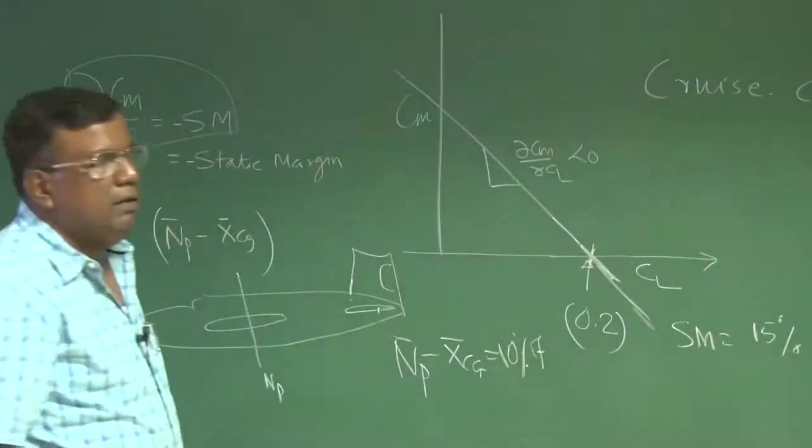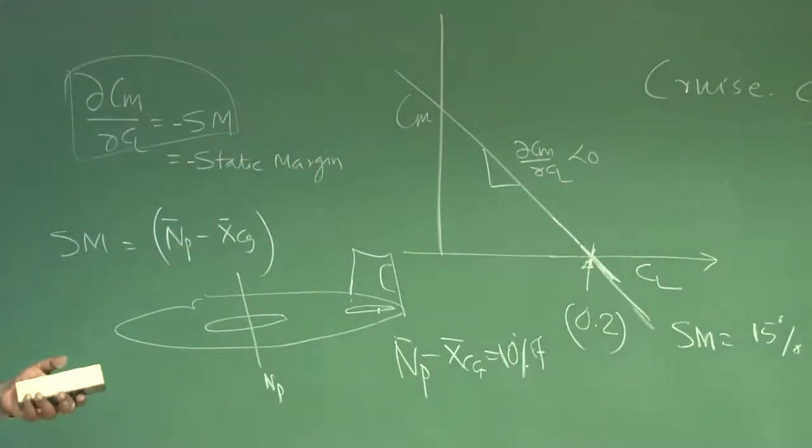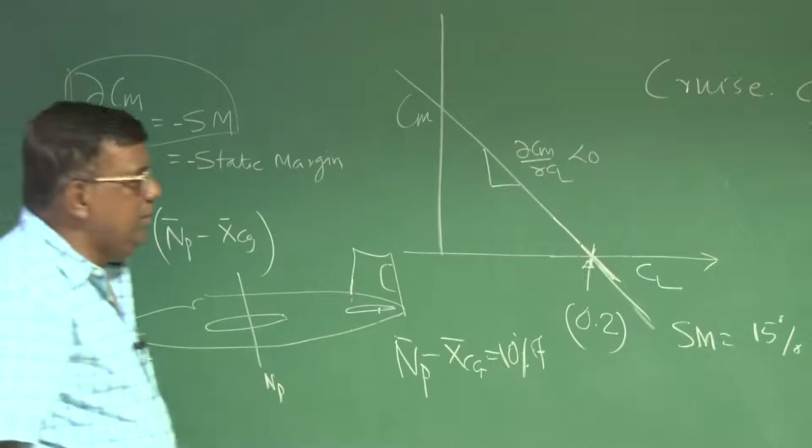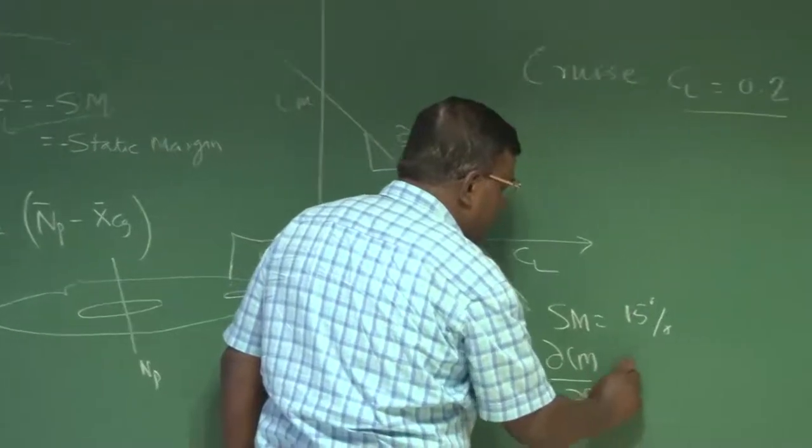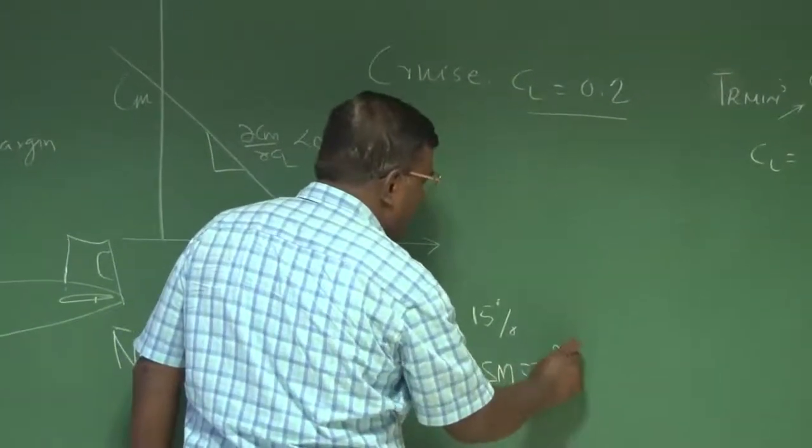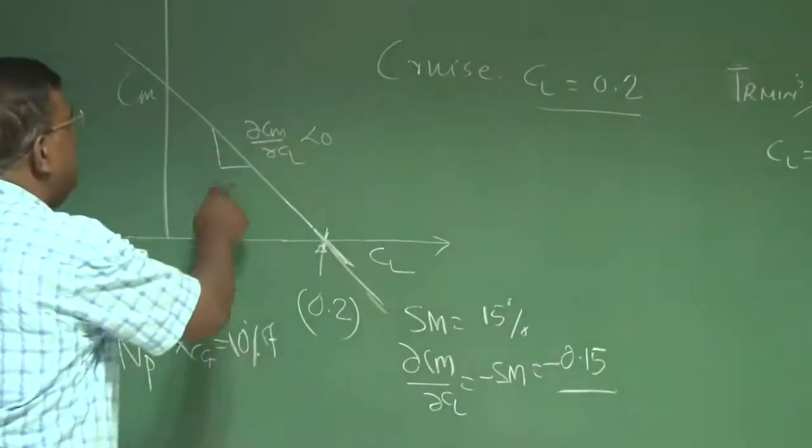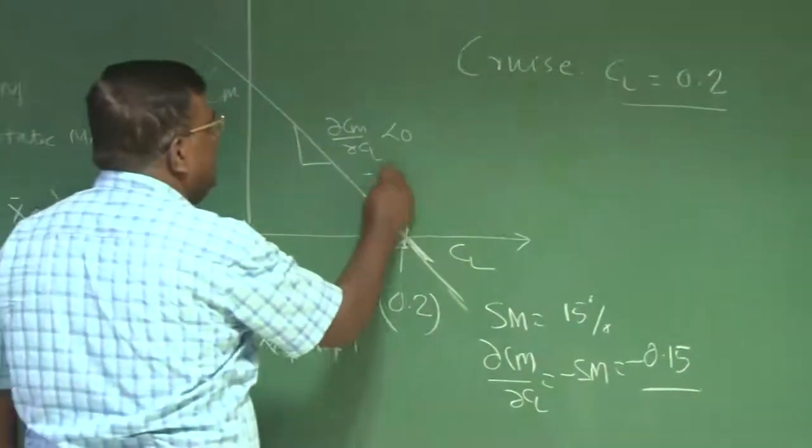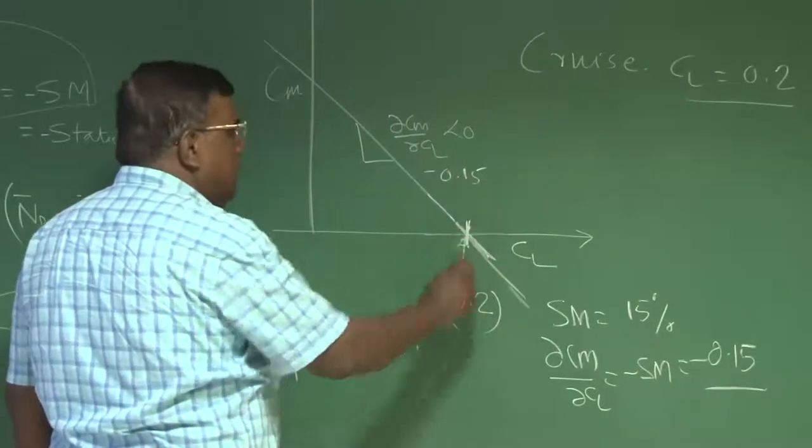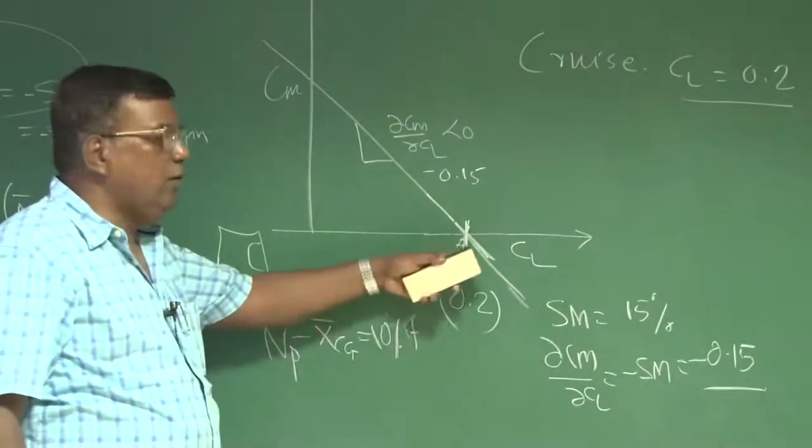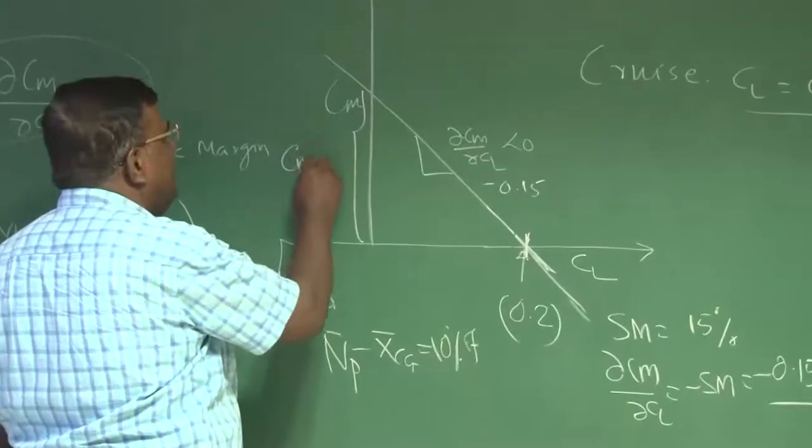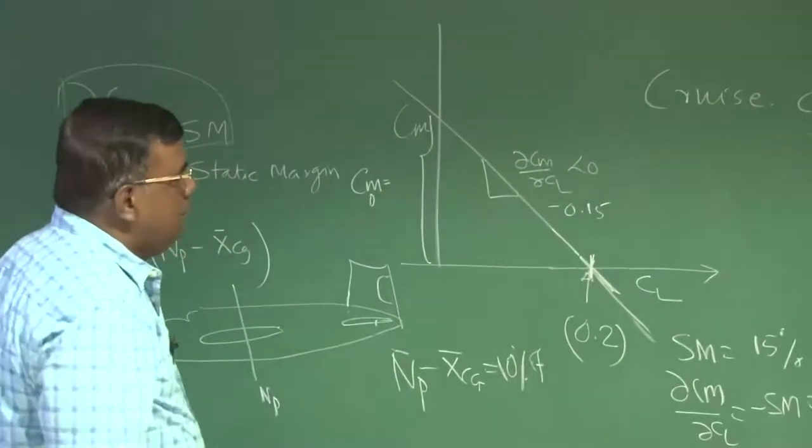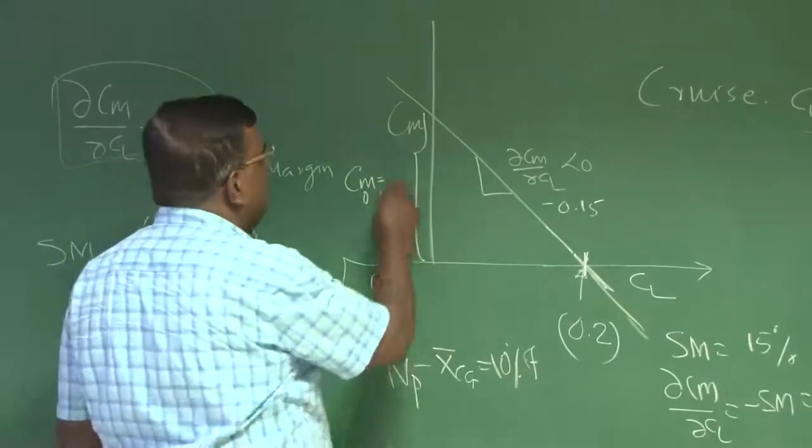So static margin 15 percent means that dCm by dCl, which is equal to minus static margin, which is minus 0.15. So this slope is minus 0.15. And I know I am going to trim the airplane at Cl equal to 0.2. So automatically I know what is the value required, Cm0, which is Cm at Cl equal to 0. That will be 0.03. So the message for designer is, I need to put the wing on the fuselage in such a way that it should be able to produce that much lift which is required for a given dynamic pressure at Cl 0.2.